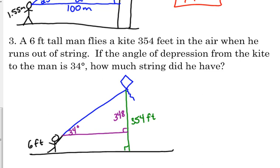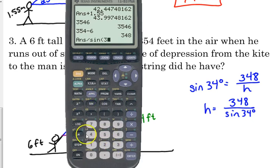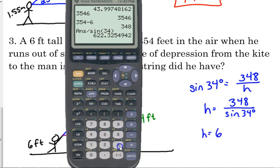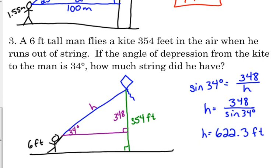Now, what part of the triangle are we trying to find? The hypotenuse. Okay, the string is the hypotenuse. So which side do we have? The opposite. So we're going to use sine. We have the opposite, 348, we're looking for the hypotenuse. So hypotenuse is equal to 348 divided by the sine of 34. We have a lot of string. 622.3 feet of string. We have the kite 354 feet in the air, but that's pretty up there.